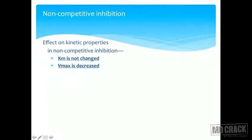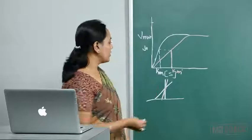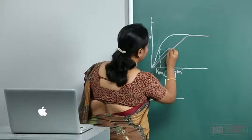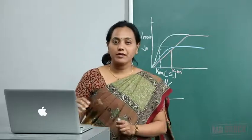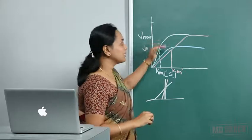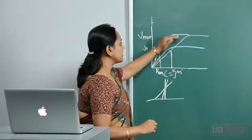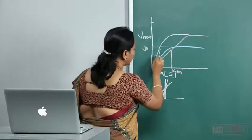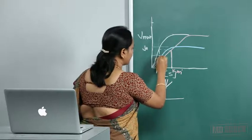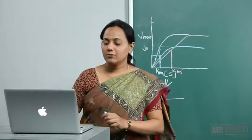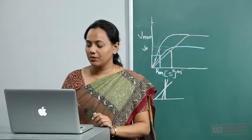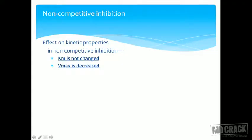Now, what is the effect on kinetic properties? This is something frequently asked in MCQs. In non-competitive inhibition, the Vmax is decreased and cannot be increased — because the inhibition manifests as a decreased Vmax. But look at KM: the KM will remain the same. So the key point is that KM is unchanged and Vmax is decreased.